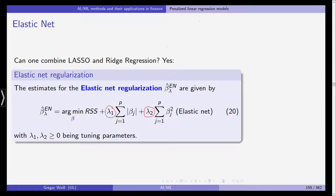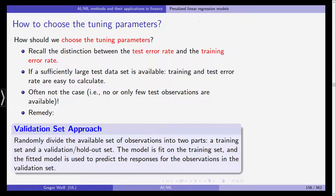The RSS, for example, is minimized in order to find the coefficients, so the training error will be minimal by construction. If you then take the model to new observations — test observations — you can again calculate metrics of the model fit, and you get the test error rate.